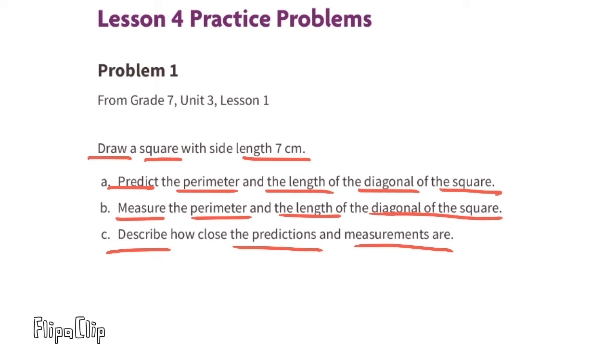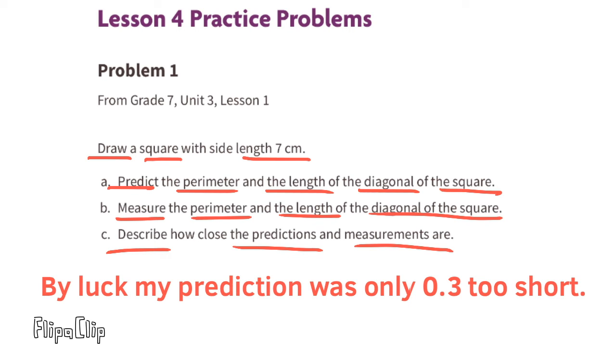Describing how close the predictions and measurements are: I was correct with the perimeter. My prediction for the length of the diagonal line was three-tenths too short.